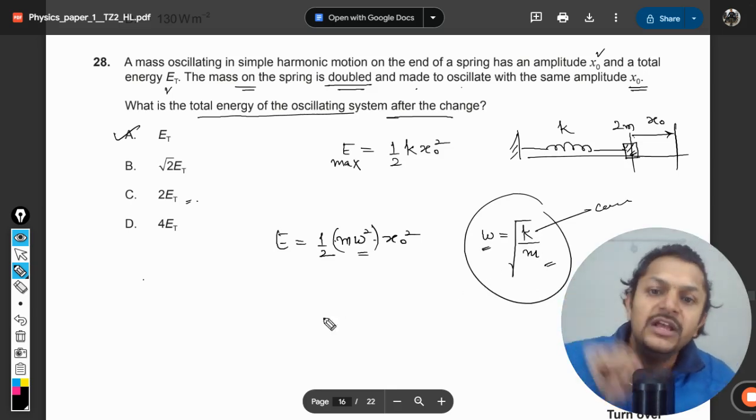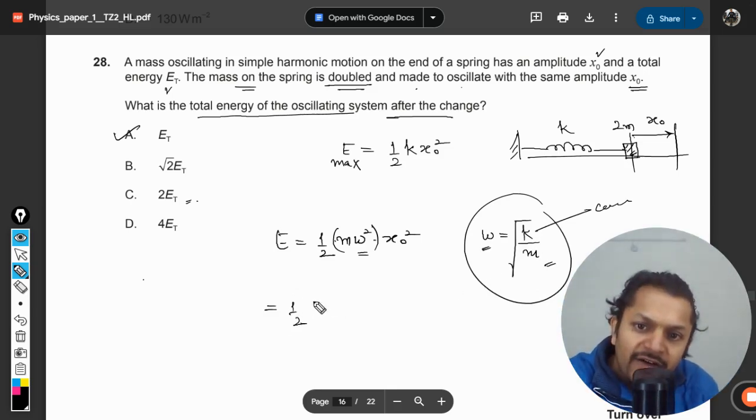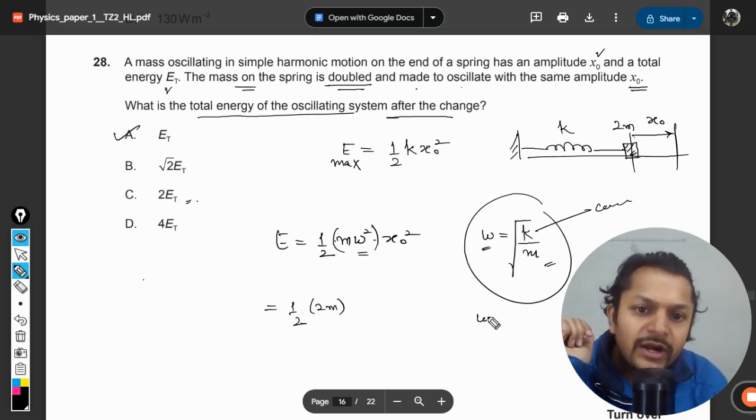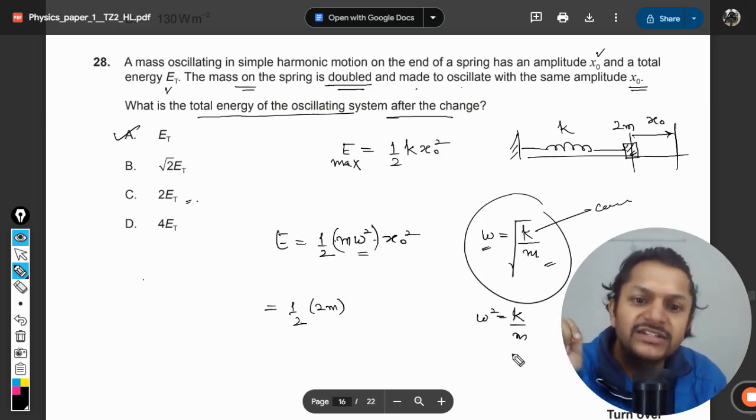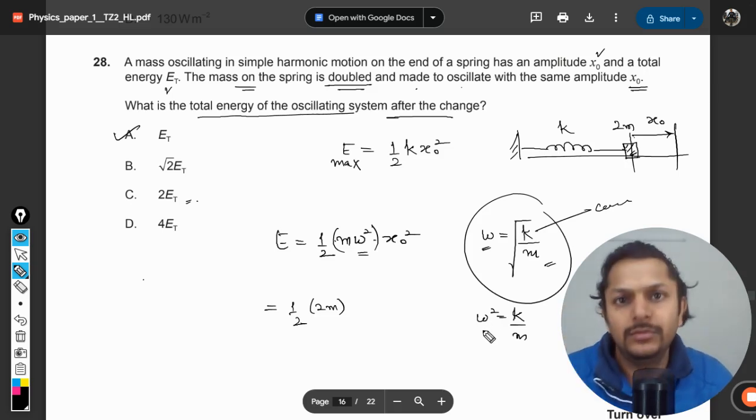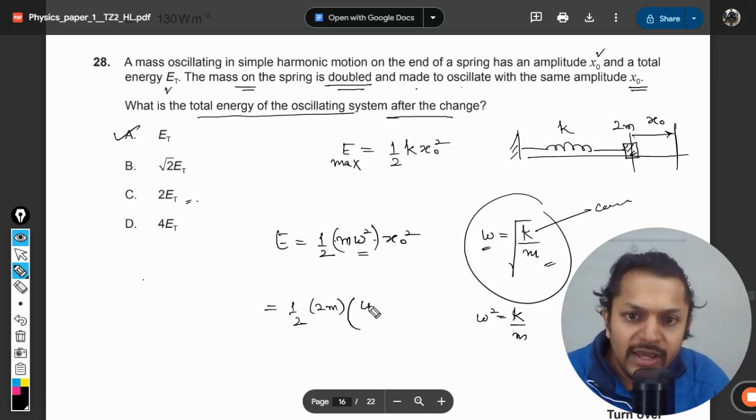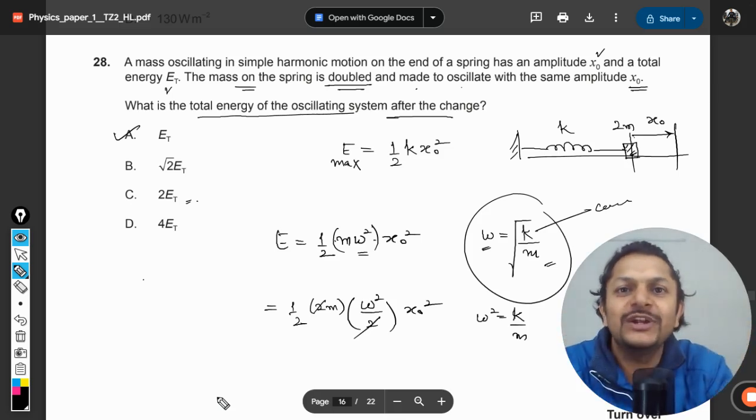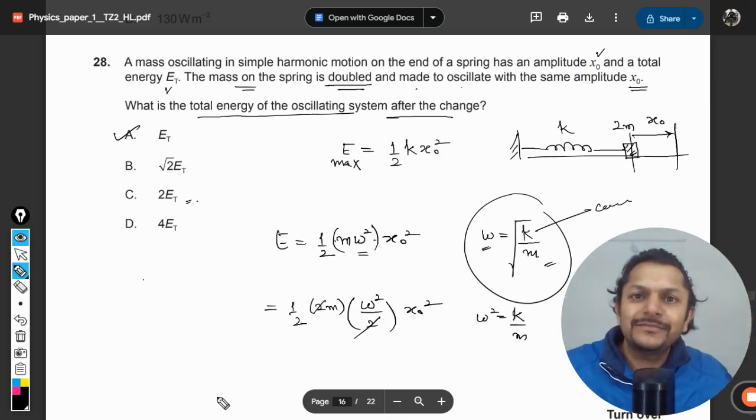From this equation I can say only k is constant. m is variable and omega is also a variable. So it means that mass is doubled, but what is happening to omega? It is ω², so ω² = k/m. Clearly when the mass is doubled, your ω² is getting divided by two, so your new omega is omega divided by √2.